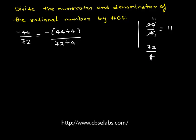Similarly, 72 upon 4: 4 times 18 is 72, so 72 when divided by 4 gives 18. Therefore, we get minus 11 upon 18.